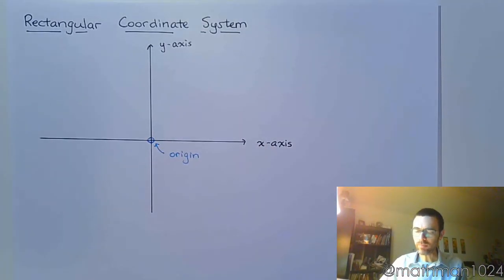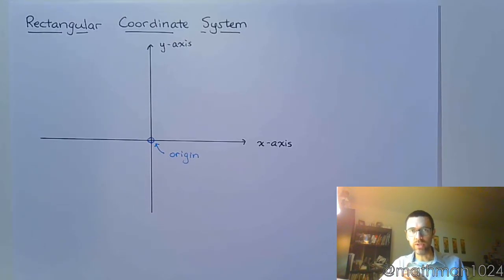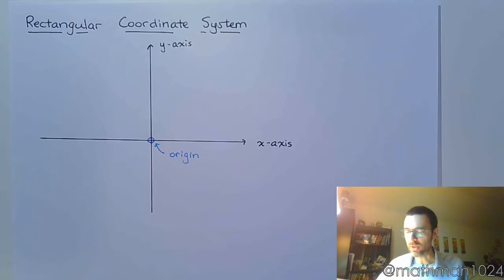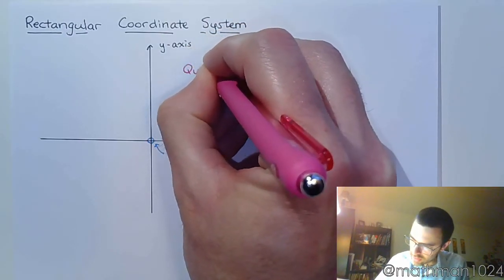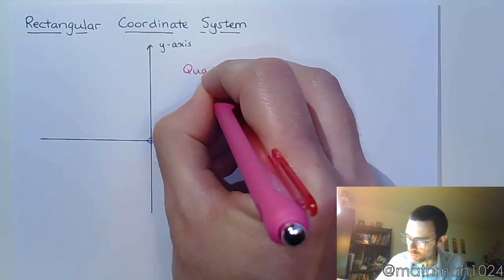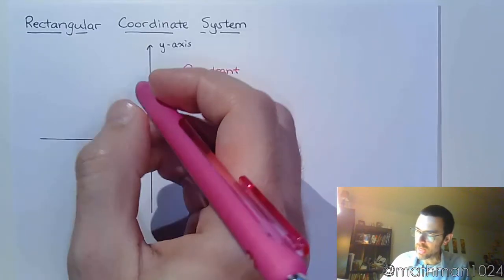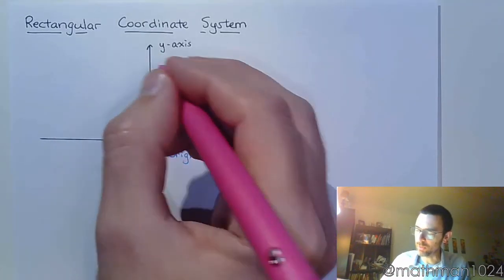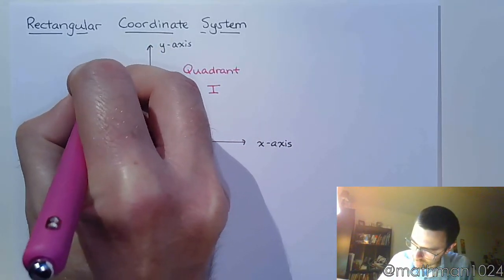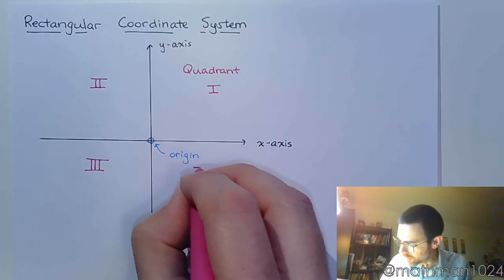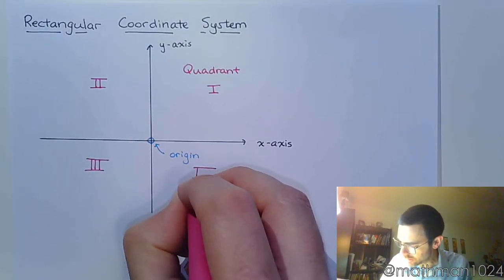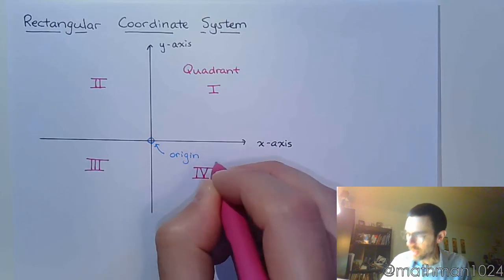These two axes will split up our rectangular coordinate system — our plane — into four sections called quadrants. The way that we label these is by using Roman numerals. Quadrant one is in the upper right, and in a counterclockwise fashion: quadrant two, quadrant three, and quadrant four is in the bottom right.